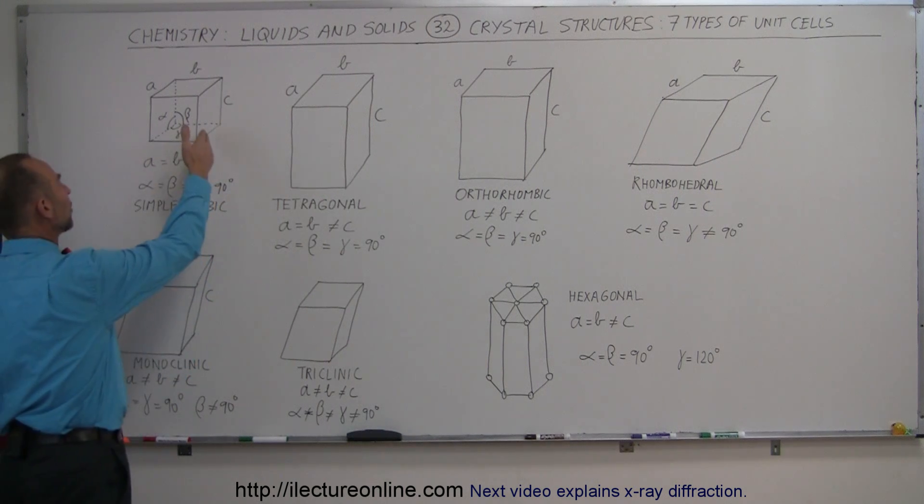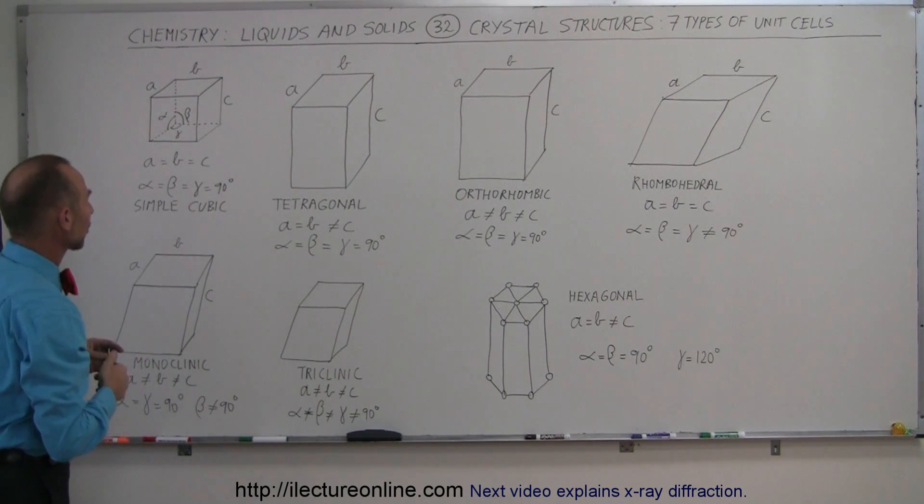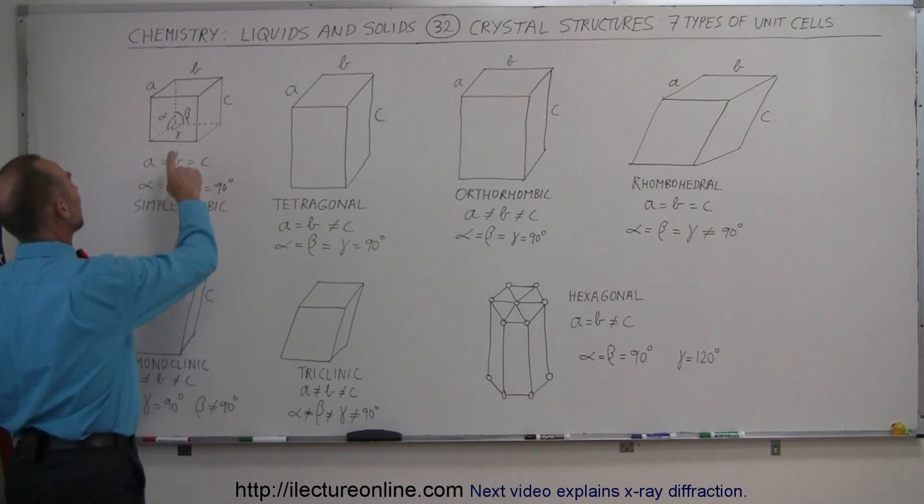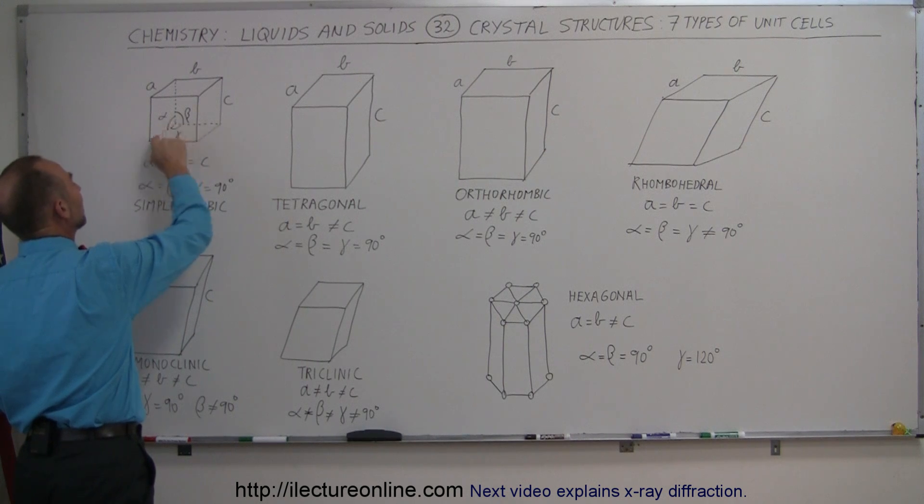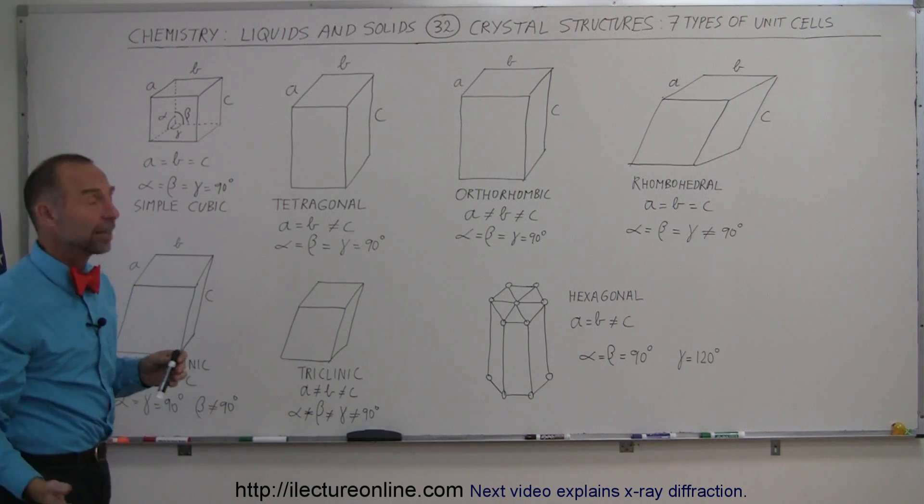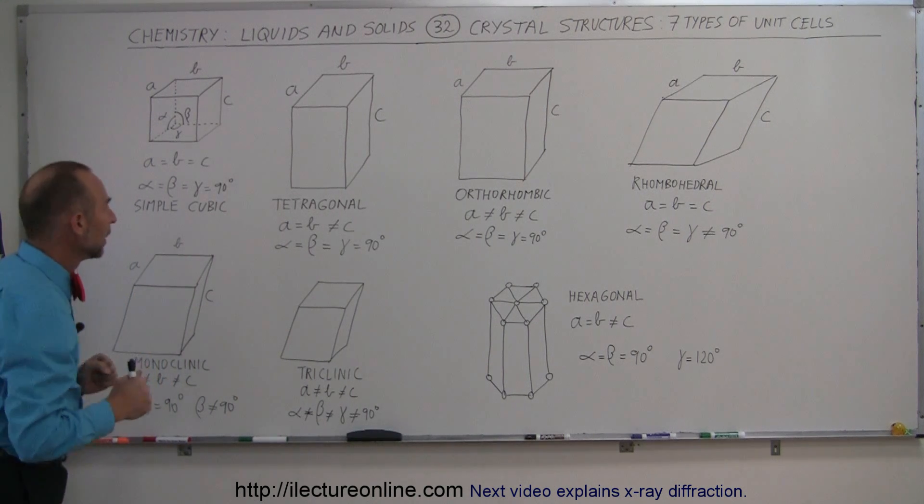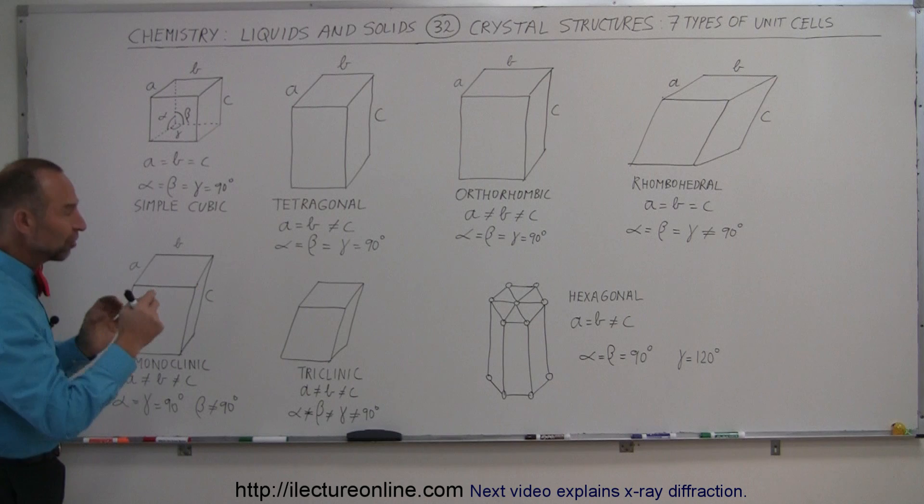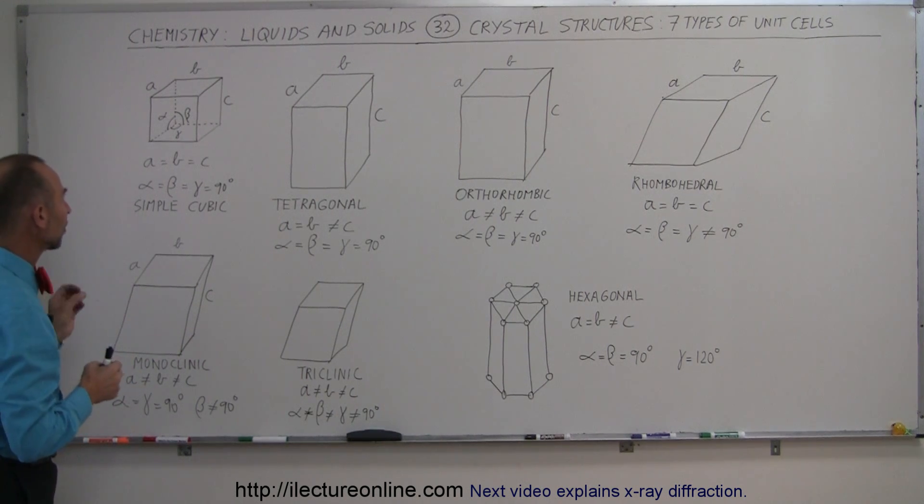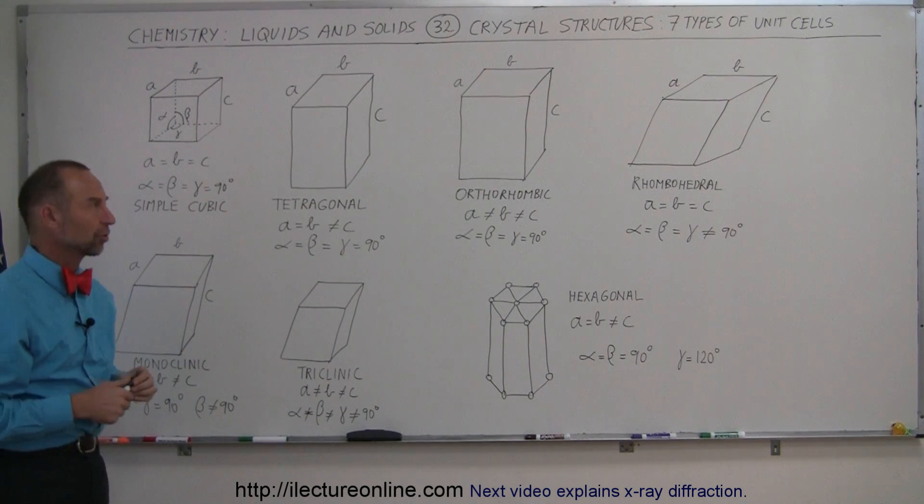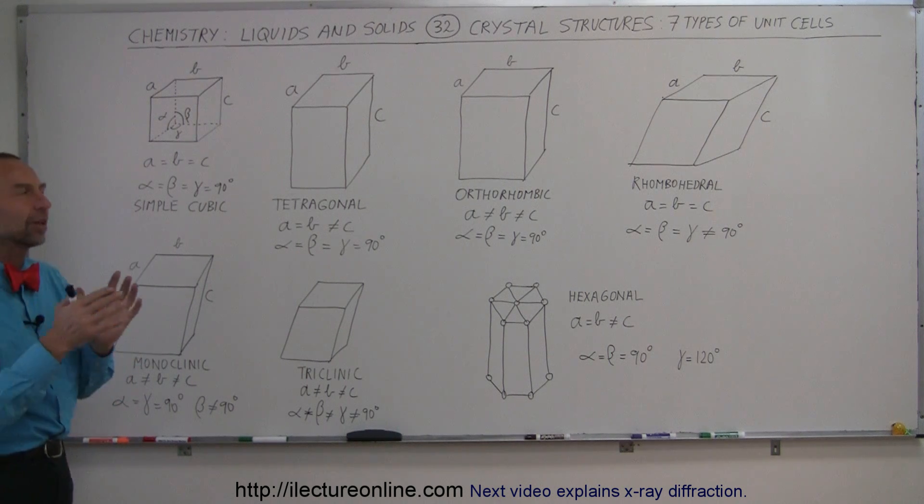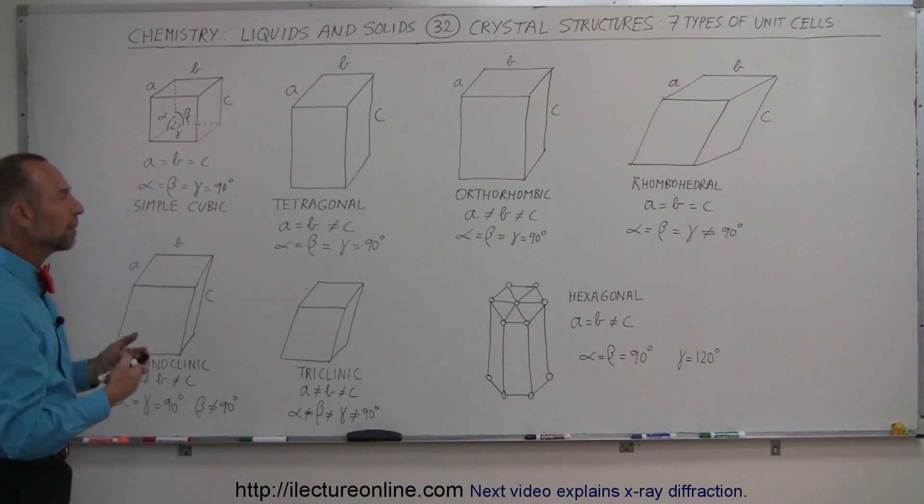We already saw in quite a few videos the simple cubic structure where the dimensions in all directions are the same. Sides A, B, and C are the same, and the relative angles between the various axes, between the sides of the cube, they're all the same. So it's a straightforward simple cube. We have different dimensions depending upon how atoms are packing there, but as long as A, B, and C stay the same and the angles are 90 degrees, we have a simple cubic structure. That's a very common unit cell structure in chemistry, but we also have other ways in which crystalline structures will be packed together.